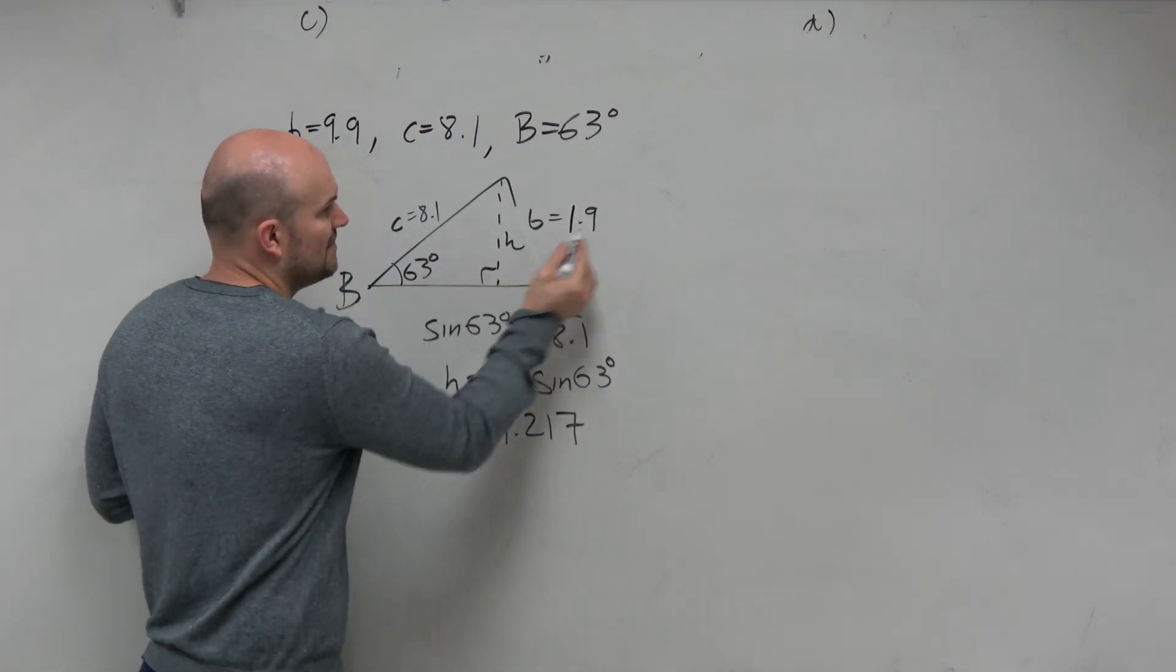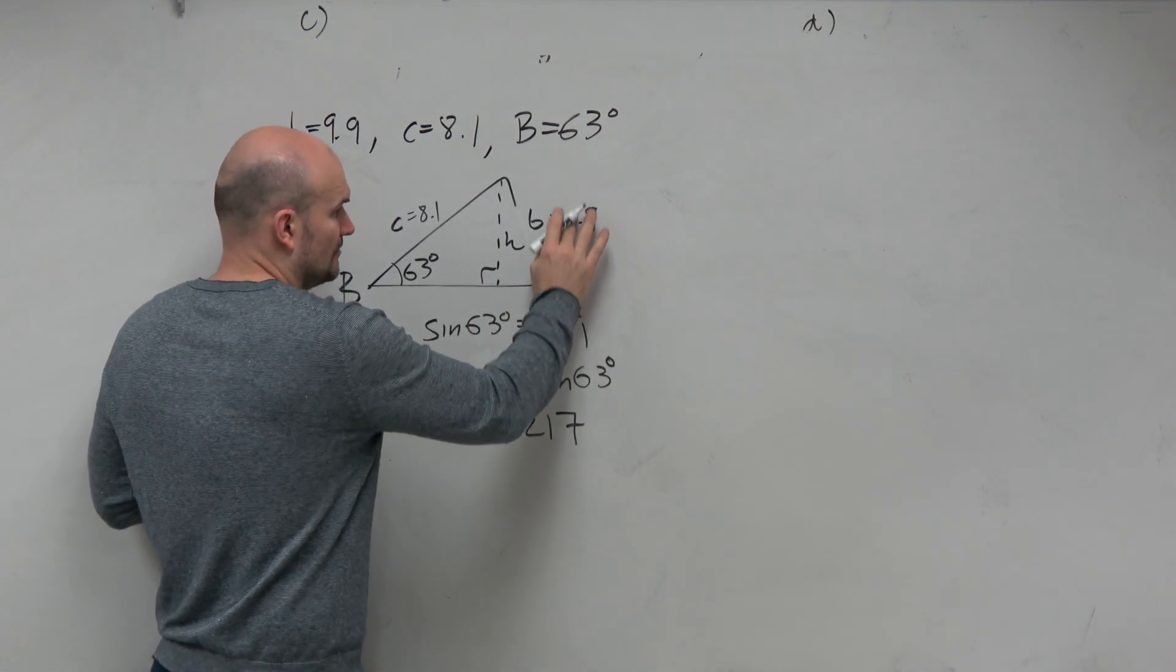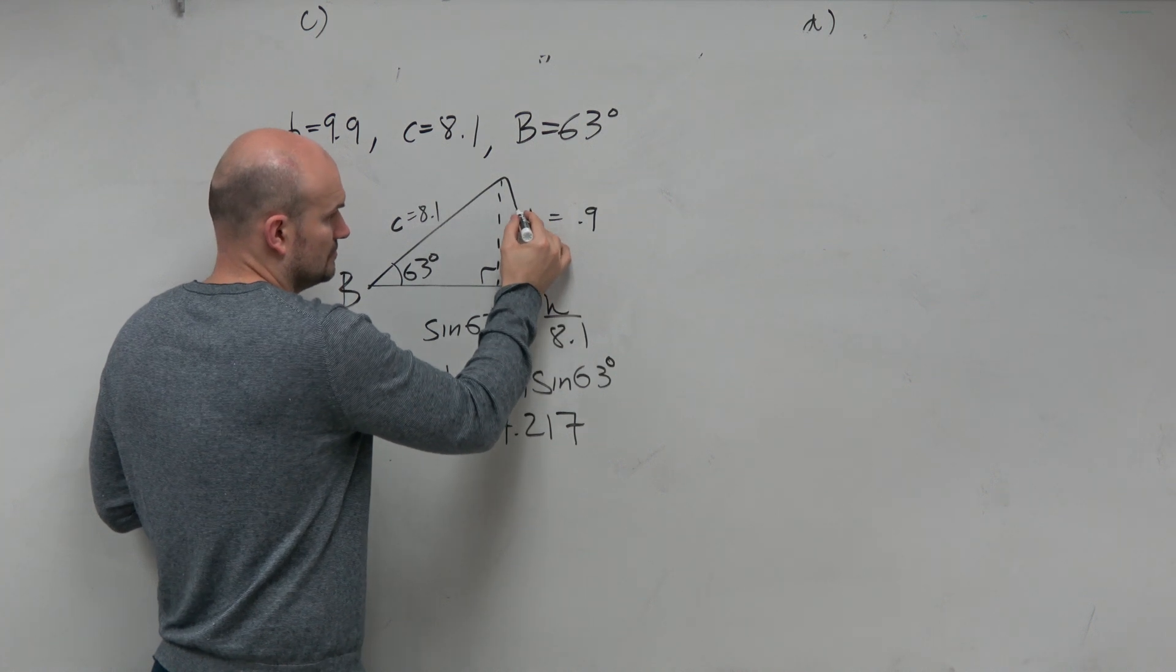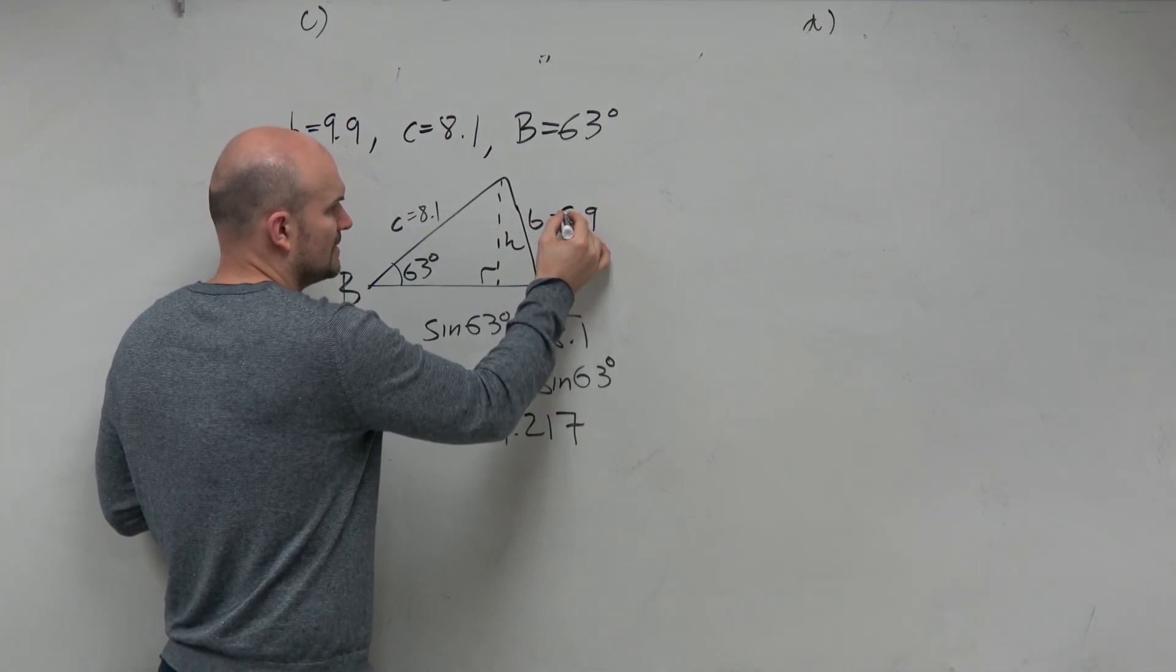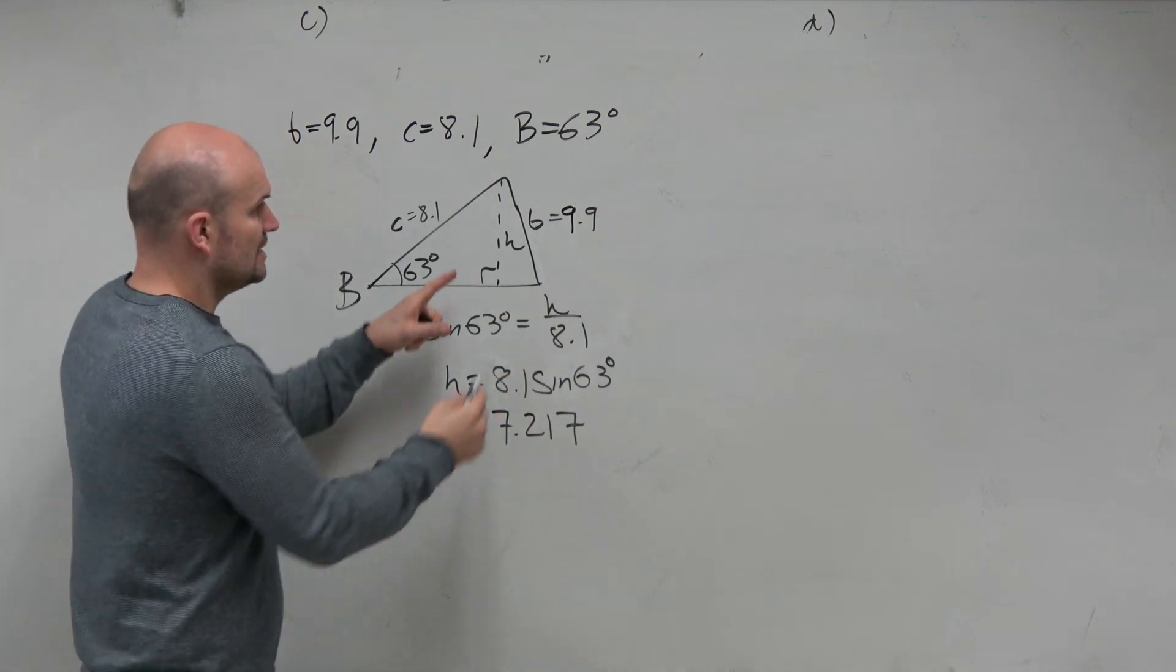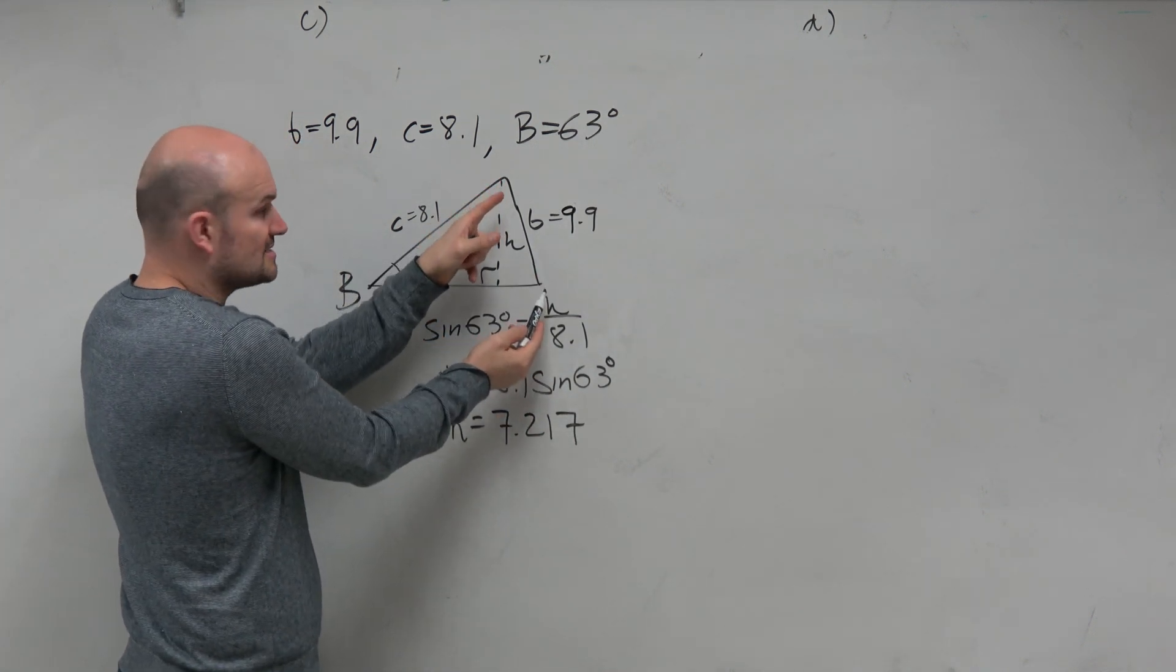Now, let's pretend this is 9.9. Okay, so this is 9.9. So now we know that one triangle exists, right? Makes sense. However,